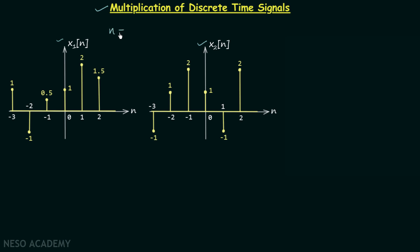For example, when n is equal to 1, x1n is equal to 2, and in the second signal when n is equal to 1 the signal is equal to minus 1. We multiply 2 and minus 1 which gives us minus 2. Corresponding samples means samples of the two signals when n is the same.